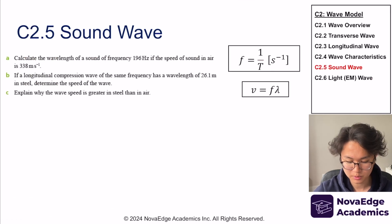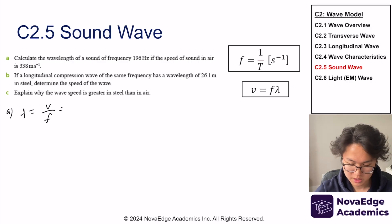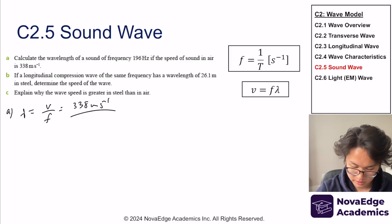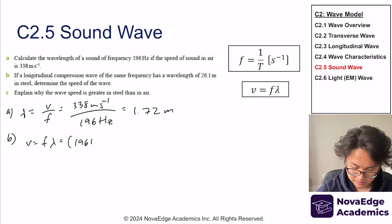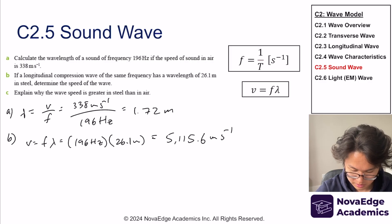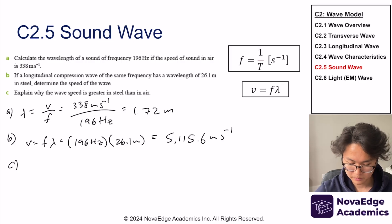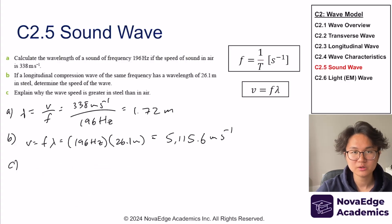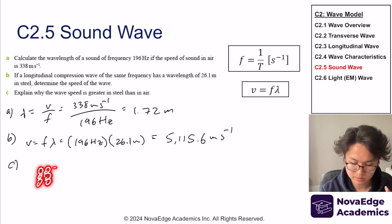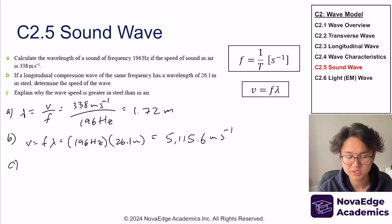Practice problem: wavelength equals V over F. In SI units, that's 338 meters per second divided by 196 Hz, giving 1.72 meters. Part B: a longitudinal compression wave of the same frequency has a wavelength of 26.1 meters in steel, giving a speed of 5,115.6 meters per second. Part C: why is wave speed greater in steel than air? In air, particles are loosely spaced, but in steel, energy propagates through densely packed atoms, so it's easier for the wave to travel through steel.